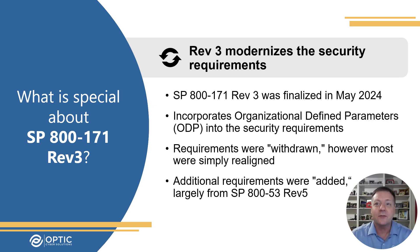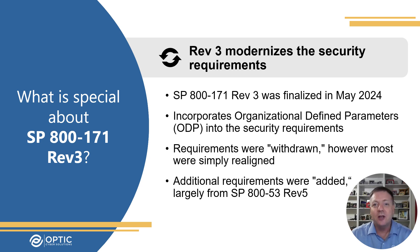One example of how we can see this is through the introduction of Organizational Defined Parameters, or ODPs, in 171 Rev 3, which adds flexibility for how the security requirements can be achieved. Additionally, while 33 requirements were technically withdrawn, most of these were simply realigned. Withdrawn simply means that the requirement IDs are being removed because the concepts from the requirement were moved to other security requirements. There were also 19 newly added security requirements based on the expansion recently made to 800-53 Rev 5 and the changes to tailoring guidance when down-selecting from 853 security controls to 171 Rev 3.